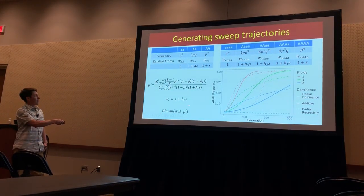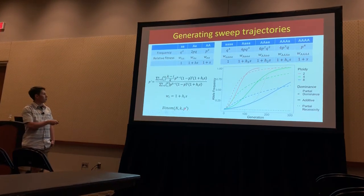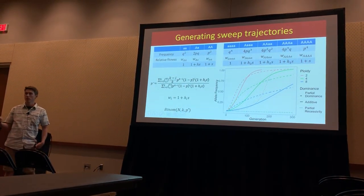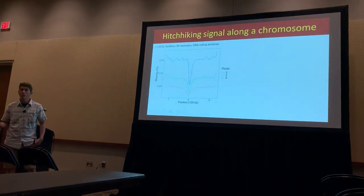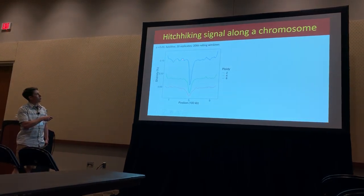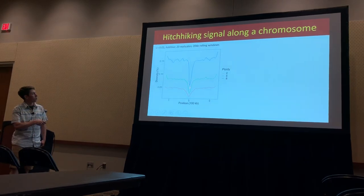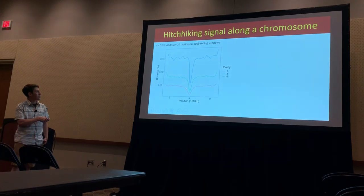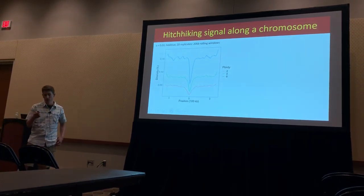We generate stochasticity about these expected trajectories by sampling a number of individuals for a given ploidy level for the expected frequency in the following generation. If we do that many times with replicates and apply heavy smoothing across the chromosomes, what you generally see is that for high ploidies, you get this long, narrow dip in diversity around your sweep region, but with lower ploidies you get a shallow, broad dip in diversity around the selected region.